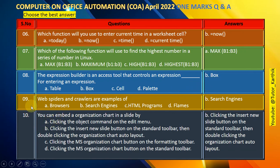Question number 9: Web spiders and crawlers are examples of: A. Browsers, B. Search engines, C. HTML programs, D. Frames. The right answer is B — search engines.